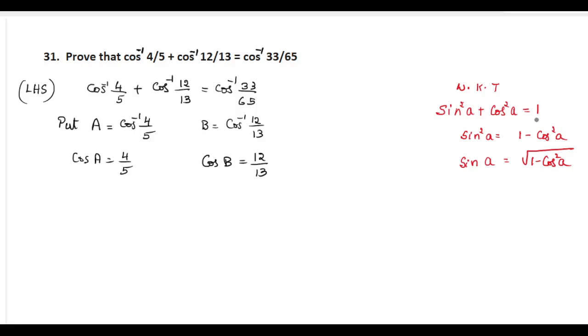We know that sin square A plus cos square A equal to 1. Use this formula to find sin A and sin B. Now sin A equal to root of 1 minus cos square A, or we can write root of 1 minus, we know cos A. So cos square A is 4 by 5 the whole square. When you calculate this, you get sin A equal to 3 by 5.